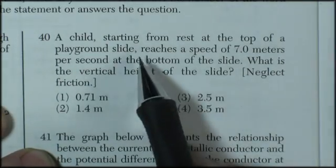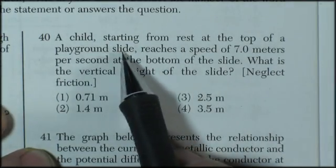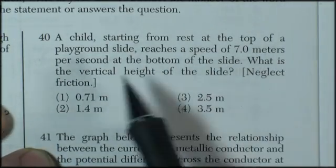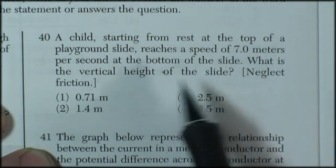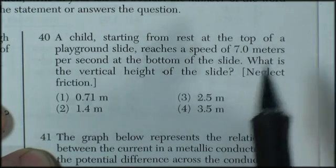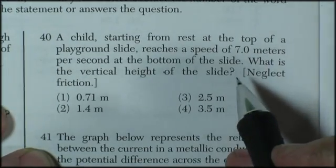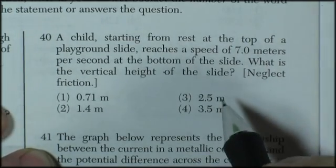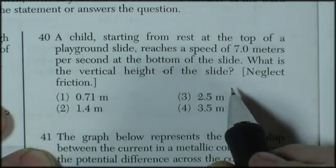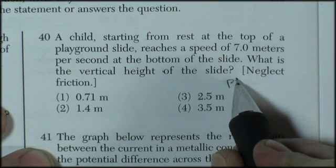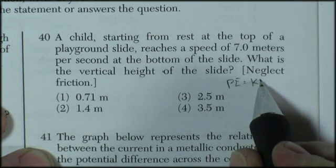Question 40. A child starting from rest at the top of a playground slide reaches a speed of 7 meters per second at the bottom. What is the vertical height of the slide, neglecting friction? So I'm going to use the energy equation to deal with this. I'm going to say that the potential energy at the top will be equal to the kinetic energy at the bottom.